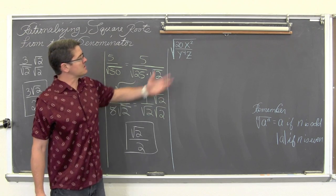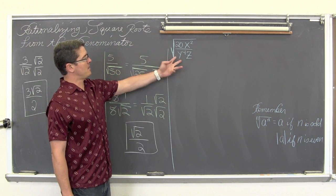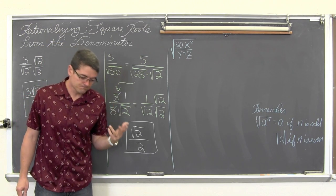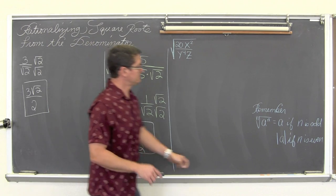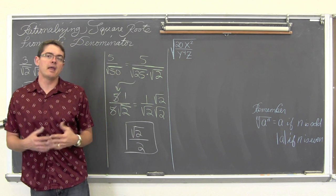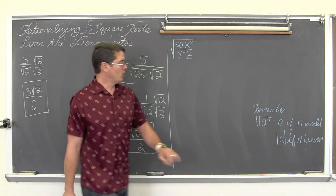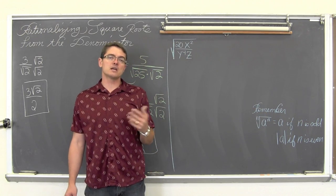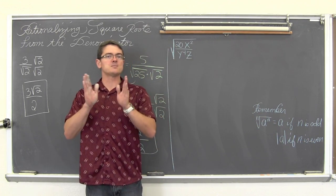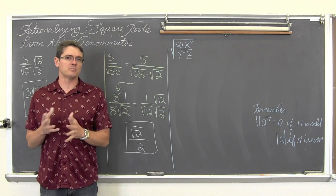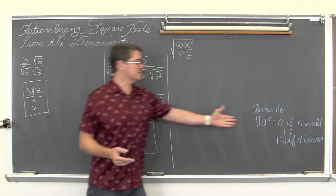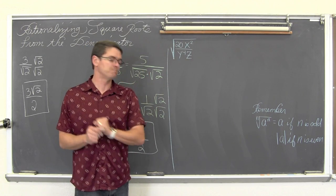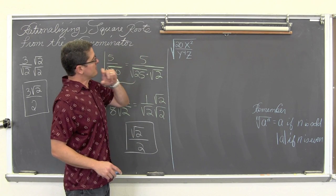Now we have a relatively difficult example of rationalizing when you have a monomial in the denominator — no plus or minus, so it is one term. We are going to simplify as much as we can. My textbook, if you have been watching my videos about simplifying square roots, handles the variables as if they can be any real number. When the exponent is odd, the answer is just the base; when even, we need absolute value symbols to ensure we do not imply we are square rooting a negative number.